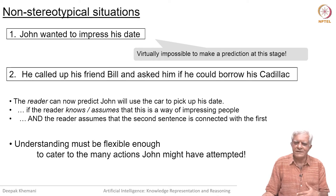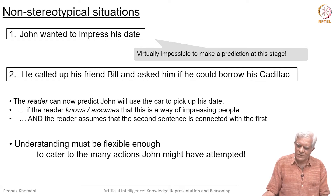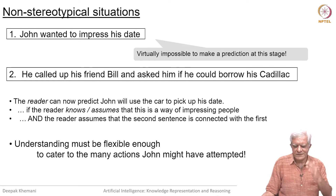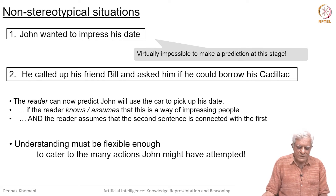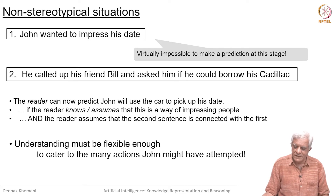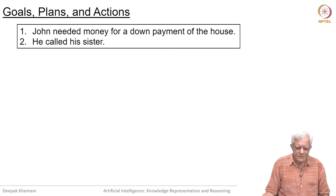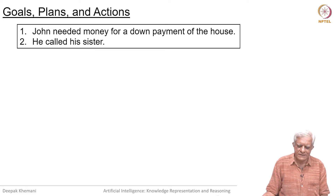Scripts connected sentences in a fixed manner. Now we are trying to find different ways of connecting sentences. We also saw that when this assumption — that sentences follow from each other — is violated, we can get an element of surprise, garden path sentences, or even jokes. Understanding must be flexible enough to cater to many situations and many actions that John might have attempted. So we need to reason about goals, plans, and actions.